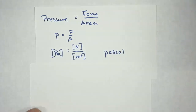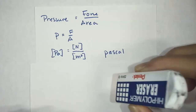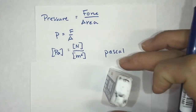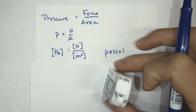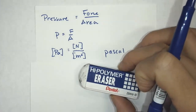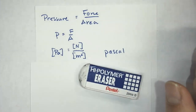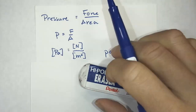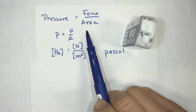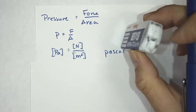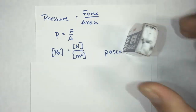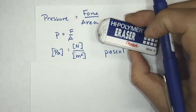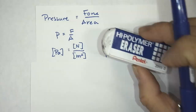Right now there is pressure of this eraser on the table. But if I put it sideways it's going to have less pressure. The reason is because now I've changed the area. Here we have a small amount of area and so it's going to have more pressure — it's got the same force, which is the weight of this eraser. But if I put it sideways, the pressure is less.